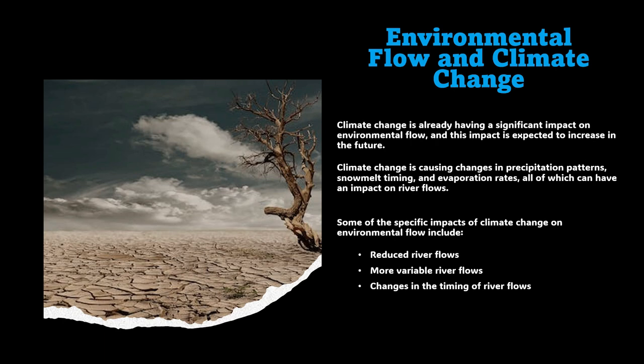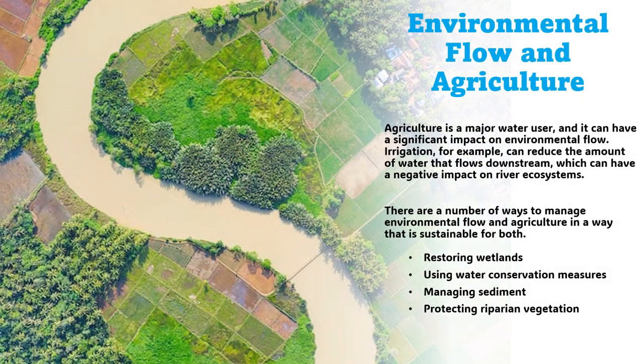Reducing water withdrawals can be done by improving water efficiency, using water conservation measures, and reducing the amount of water used for irrigation. Dams can be modified to allow more water to flow downstream by raising the height of dams, increasing the width of spillways, or installing fish ladders. Sediment can be managed by releasing it from reservoirs or other water bodies, or by planting trees and shrubs along the river banks.